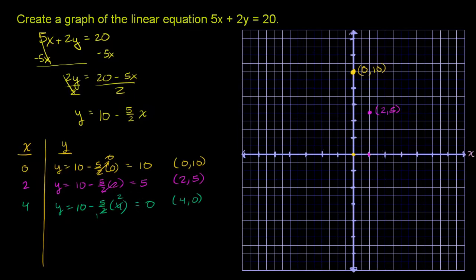So x is 1, 2, 3, 4. And then y is 0. So we don't move up at all. So we have 4, 0.